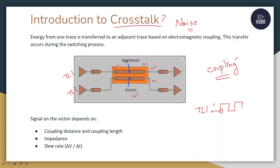The signal strength on the victim depends on four factors. First is the coupling distance, second is the coupling length, third is the impedance, and fourth is the slew rate.